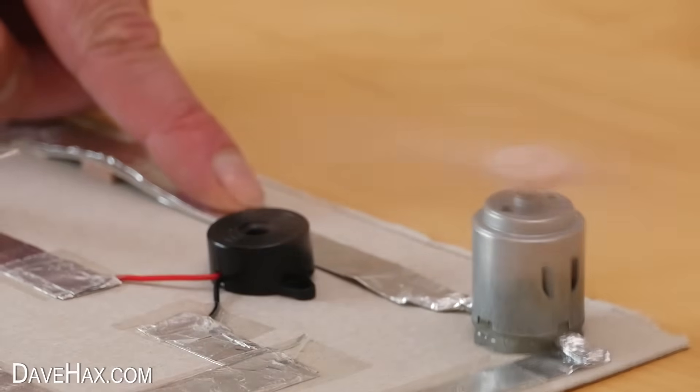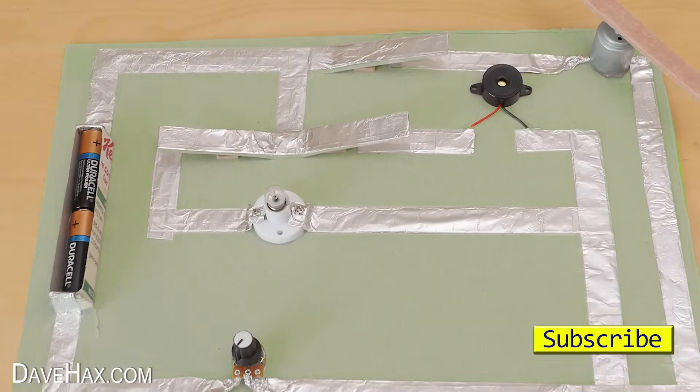If you make it on a different coloured piece of cardboard the foil circuit will really stand out.